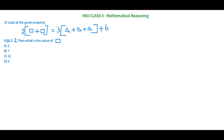Let's see the third question for today. Look at the given property: 2 times (rectangle plus rectangle) equals 3 times (triangle plus triangle plus triangle) plus 6. This is the equation given to us. Also, triangle equals 2. We need to find the value of rectangle. Let's first work out the right-hand side.